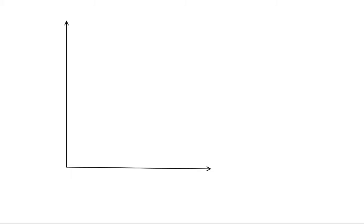I've already drawn up some axes and when we're thinking about goods market equilibrium we are thinking of these demand and supply functions being drawn out in interest rate and output space. For this case we're going to talk about output in period one, as we're in an intertemporal model, so we can only model our static output in two-dimensional space. If we wanted to draw up a three-dimensional model then we could start to think about decisions in multiple periods, but we're going to stick to just looking at period one output in this diagram.